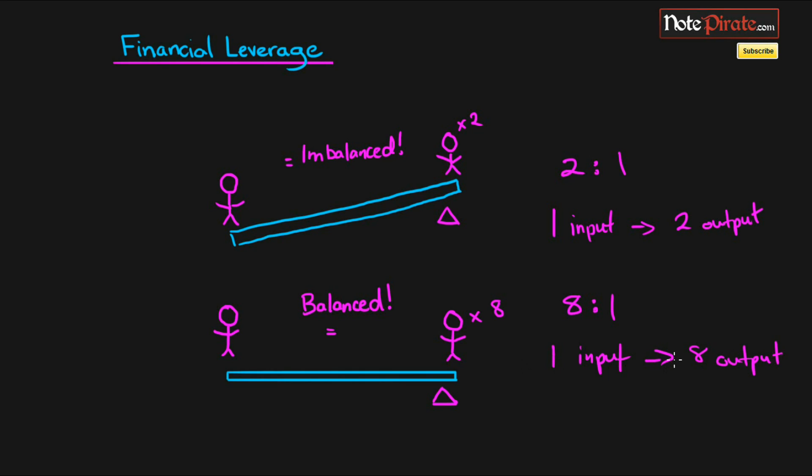So with the one input, we've amplified our output now to eight output. You can see as we increase the leverage, we're also increasing our output, or technically you can think of this as our reward. But this can also be our loss, and we'll talk about that right now as we look at an investment example.